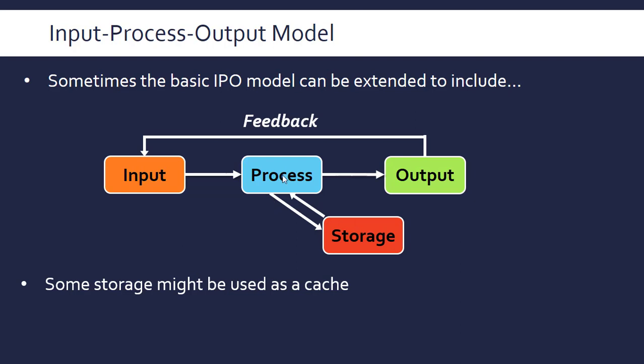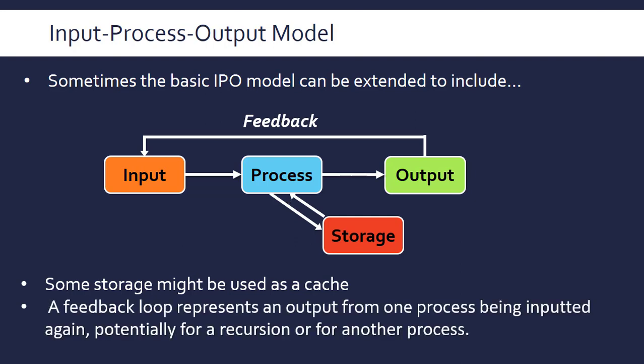The feedback loop can represent an output from one process being inputted again to the same process, maybe in recursion, or if this is another process like a chain of processes. Recursion is where it kind of runs itself on the data it was using repeatedly until it reaches a base case. This can signal it's repeating the same process again or inputting to another process.